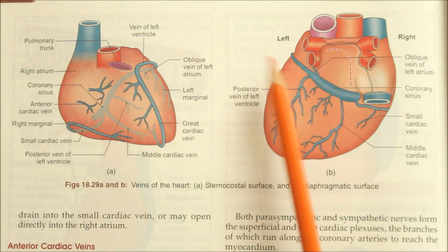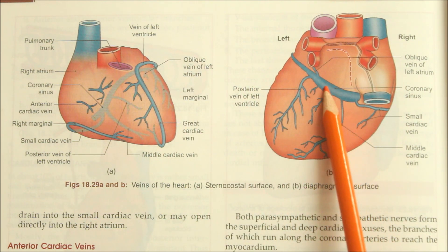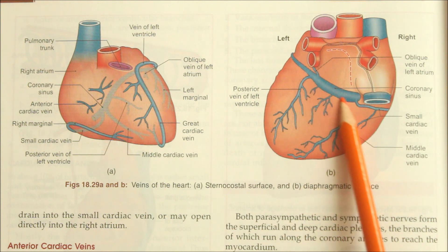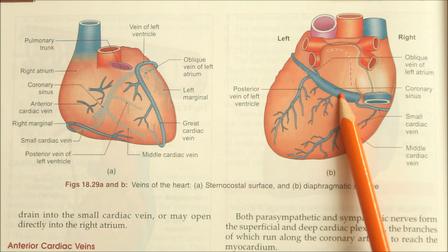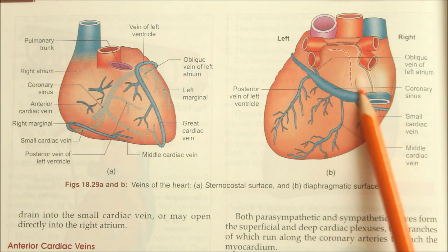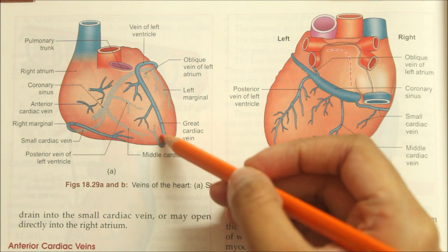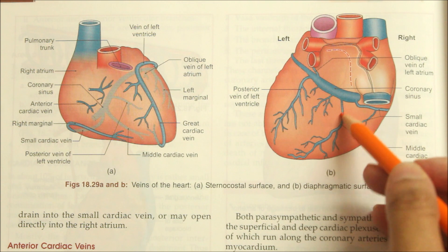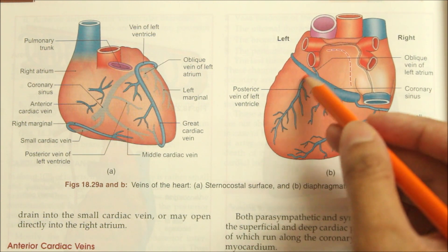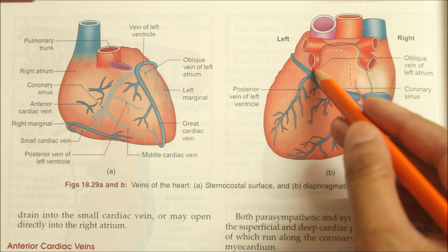Now looking at the veins of the heart — this is the sternocostal surface and this is the diaphragmatic surface. Let's look at the coronary sinus first. It is the largest vein of the heart, situated in the left posterior coronary sulcus. It is about 3 cm long and ends by opening into the posterior wall of the right atrium. It receives the following tributaries: the great cardiac vein, the middle cardiac vein, the small cardiac vein, the posterior vein of the left ventricle, and the oblique vein of the left atrium.